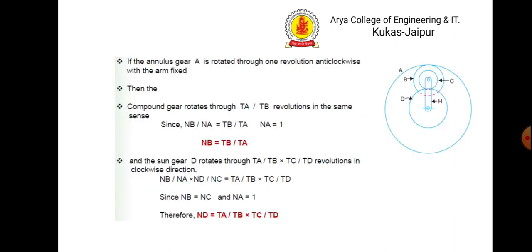As you can see in the figure, let us assume that gear a rotates through plus one revolution anti-clockwise. If it rotates anti-clockwise, then it meshes with gear number b, which also rotates in the anti-clockwise direction. So nb upon na equals ta upon tb.